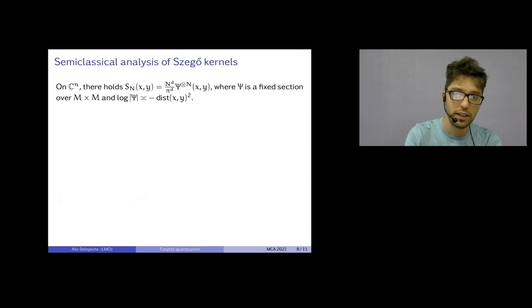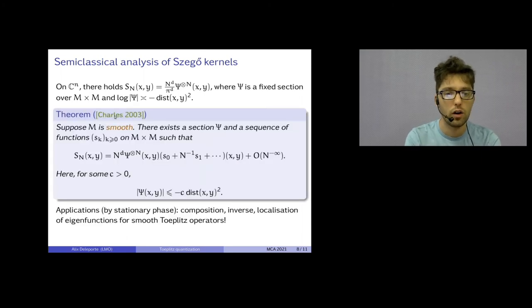Okay. So, how does it work generally? On C^n, I told you we have a very explicit formula. And this pretty much works in every situation. So, if you have a smooth manifold, you can write your Szegő kernel as something to the power n times a symbol plus an O(∞) symbol. So, once you have this, as I said, you can do stationary phase. You can compose inverse Toeplitz operators. You can study localization of eigenfunctions. Modulo h^∞ for smooth Toeplitz operators.